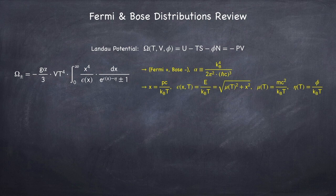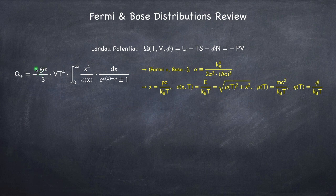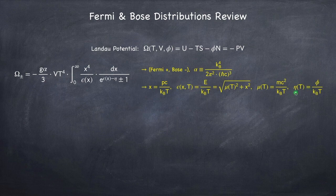Eta is often referred to as the degeneracy parameter. And you have to be careful not to confuse it with this quantity g here, which is called the degeneracy. So g is the degeneracy, and eta is sometimes called the degeneracy parameter. So you don't want to mix them up.